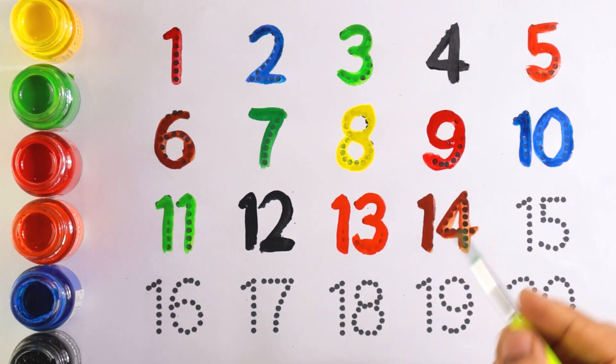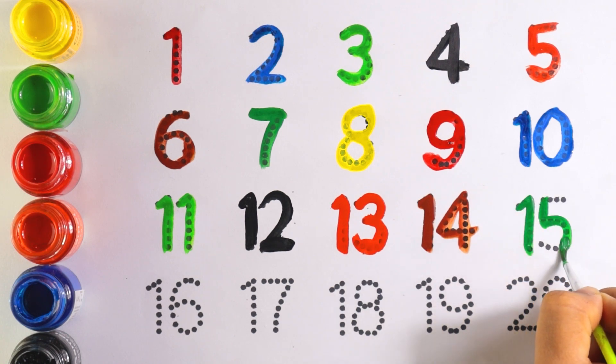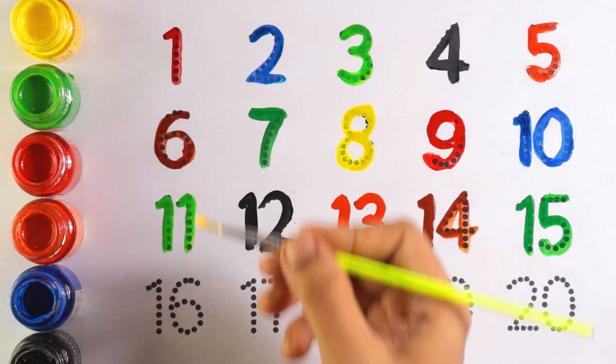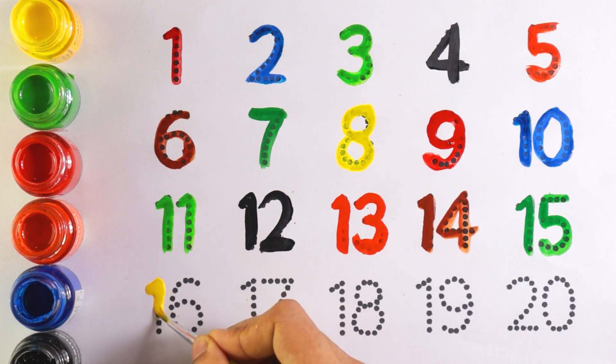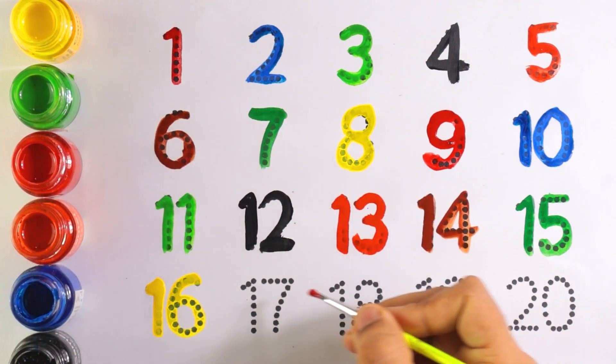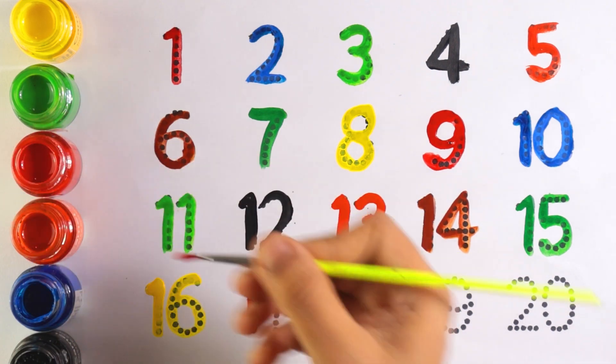Green color, number fifteen, number fifteen. Yellow color, number sixteen. One and six makes the number sixteen, number sixteen. Red color, number seventeen, number seventeen.